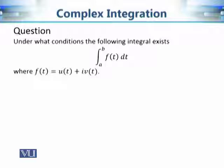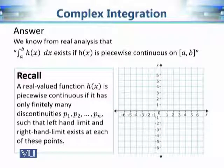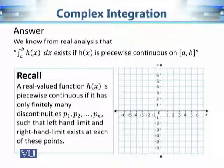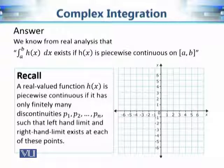The next basic question is: when does this integral exist? It is not the case that we can always evaluate this integral for every complex valued function f of t over every interval a to b. So let's look at the conditions under which this integral exists. Since integrating a complex valued function over a real interval reduces to evaluating two integrals of functions of one variable, we need to recall from calculus of one variable the criteria under which such an integral exists.